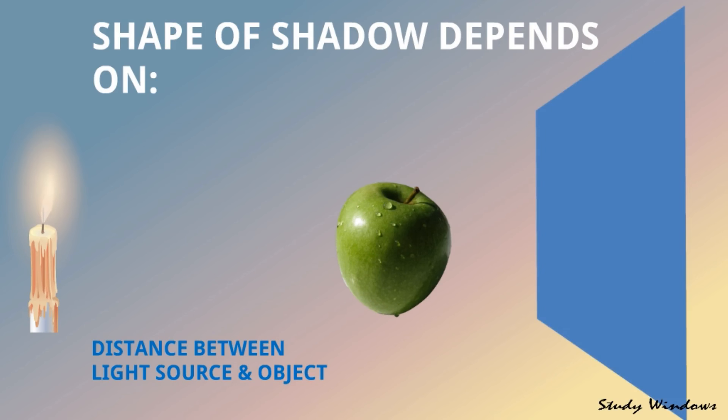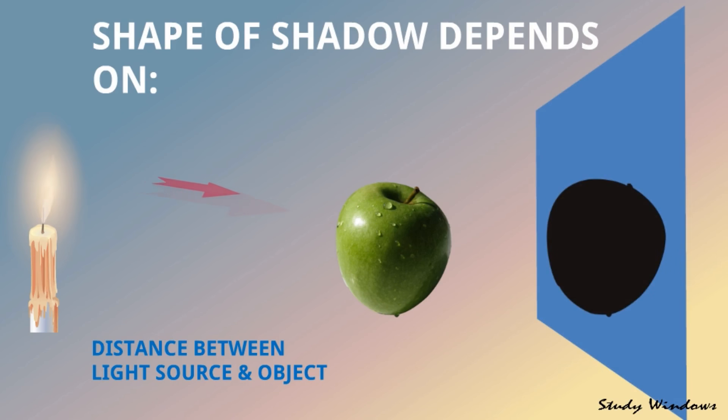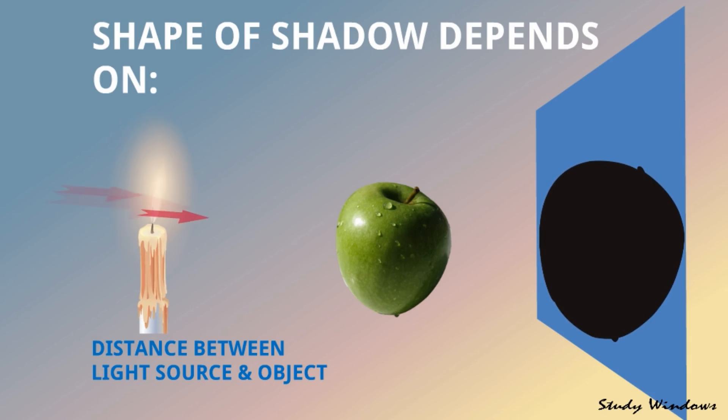Another one is distance between light source and object. You see, this is the light and here is the apple. Light is falling on the apple and this is the shadow. If we move the light closer to the object, shadow will be bigger. Let's see our children's activity.